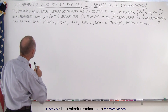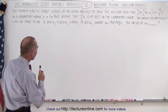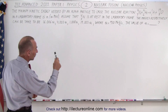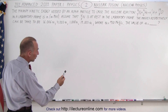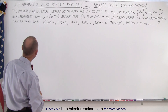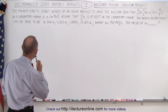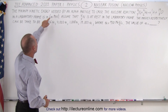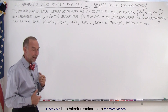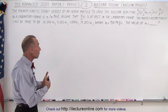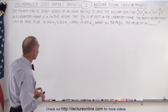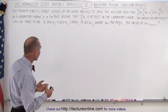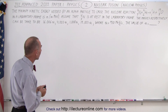The minimum kinetic energy needed by an alpha particle to cause the nuclear reaction — nitrogen plus helium gives you oxygen plus hydrogen — in the laboratory frame, expressed in N MeV. MeV stands for million electron volts, so we need a certain number of millions of electron volts to make that happen.